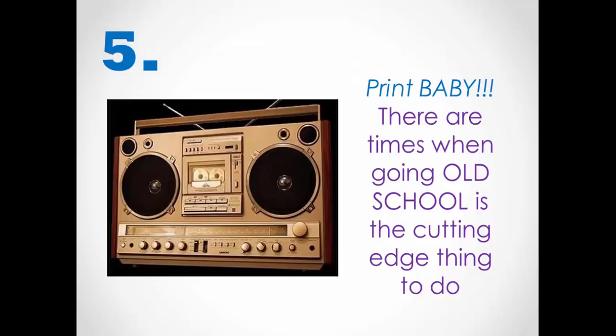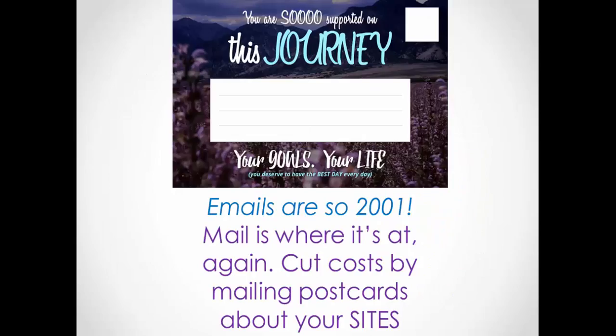The fifth way is print, baby. There are times when going old school is the cutting-edge thing to do — when everybody's running one way, you run the other. Emails are so 2001; mail is where it's at again. You can cut costs by keeping in touch with your members by mailing postcards about your sites. Some are already done for you — the weight management one and the new member start site postcard are both done. I send them out every month to my new members to make sure they get information on how to use their products. You can do emails and texting too, but when you bring in that other component of mail and hard copy, you're reaching your people one more way so they don't fall off in 12 months.